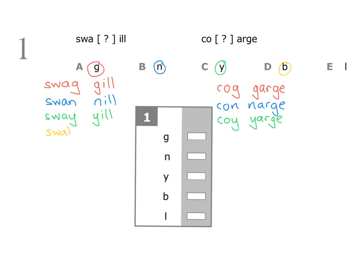S-W-A-B: this is a word — 'swab', the doctor took a swab to send off to be tested. Taking 'ill' and adding B at the front gives 'bill' — I will pay the bill in a minute. On the right hand side, taking 'co' and adding B gives 'cob' — a cob is a male swan. Taking 'arge' and adding B at the front gives 'barge' — please don't barge me out of the way.